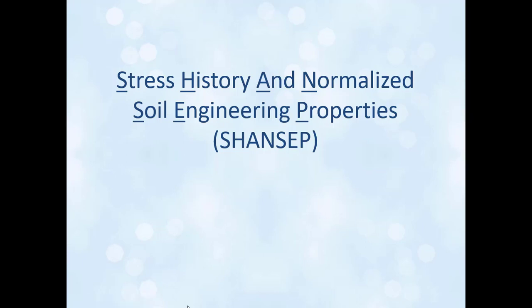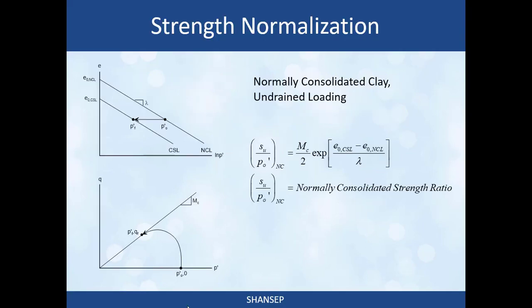In this lecture we're going to talk about stress history and normalized soil engineering properties, also known by the acronym SHANSEP. We've just gone through strength normalization. We know that the undrained shear strength for normally consolidated clay is a constant: SU over P naught prime NC equals MC over 2 times the exponential of (E naught CSL minus E naught NCL) over lambda. We're calling that the normally consolidated undrained strength ratio.